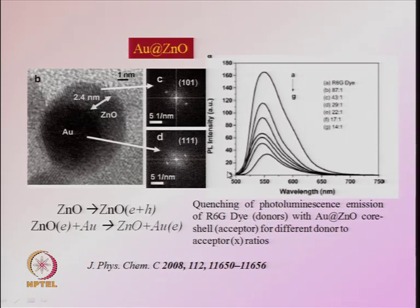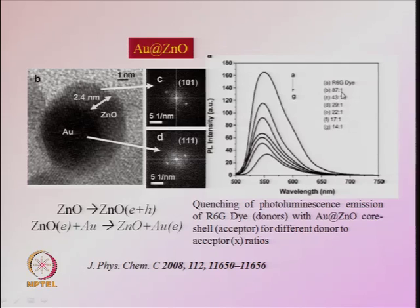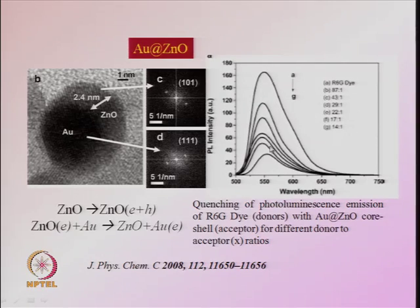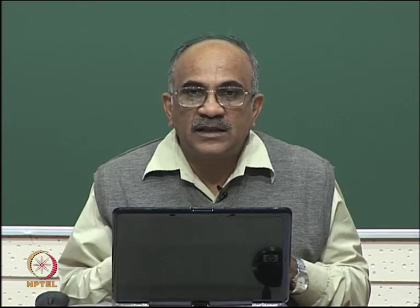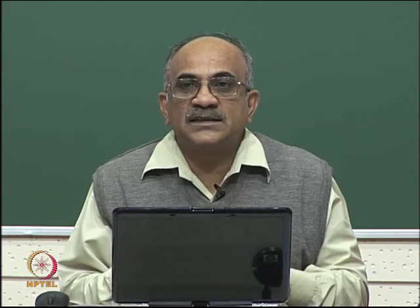This quenching is clearly observed: as the dye-to-particle ratio decreases from 87:1 to 43:1 to 29:1, the photoluminescence intensity drops. This demonstrates how combining a plasmonic metal particle and a semiconductor with an excitonic band in a core-shell structure produces significant photoluminescence changes.